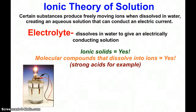First up we have the ionic theory of solution. Arrhenius came up with this theory, and it was actually not well received as his doctoral dissertation. But a few years later he was up for a Nobel Prize in chemistry for it. As we see here, certain substances when dissolved in water will produce freely moving ions and allow that solution to conduct an electric current. Substances that do that we call electrolytes — they dissolve in water to give an electrically conducting solution.